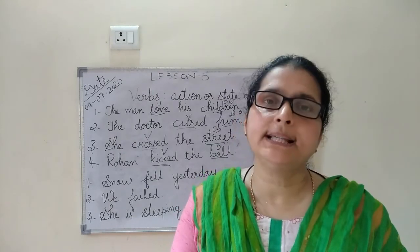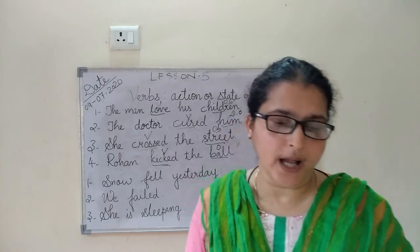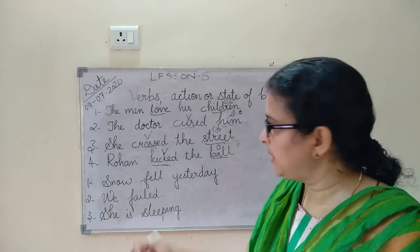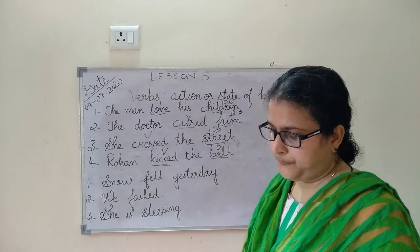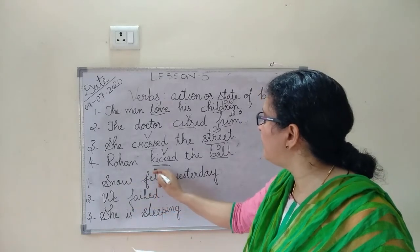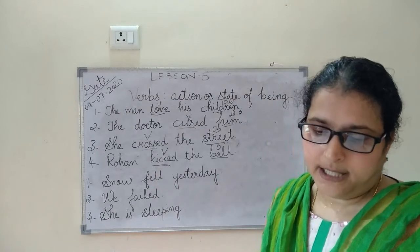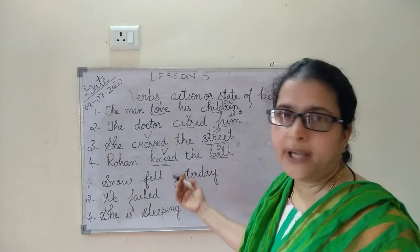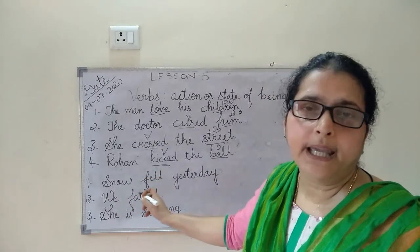Now, examples of intransitive verbs. First: Snow fell yesterday. Snow is the subject and fell is the verb. There is no object here — we cannot ask snow fell where and get a direct object. So fell is an intransitive verb.